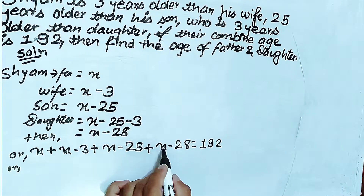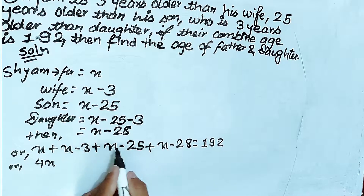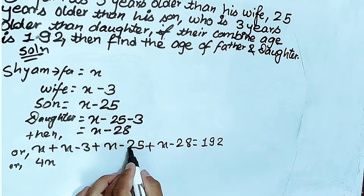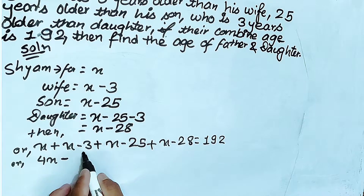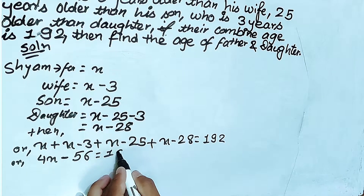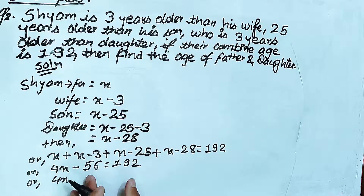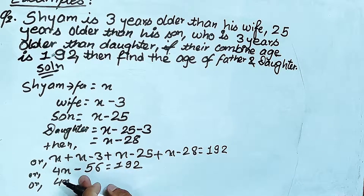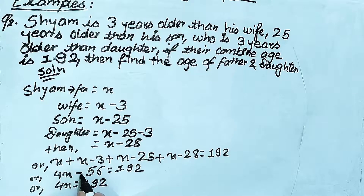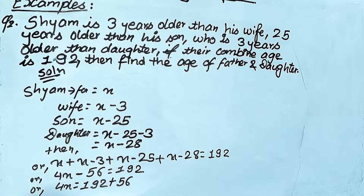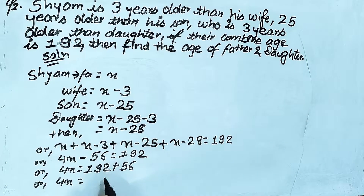x plus x plus x plus x — what are you? x is 4x. 4x minus 3, minus 25, minus 28. Equal to 192. 4x equal to 4x — combine like terms and unlike terms to make them like terms, then we'll be minus 56. Minus is equal to plus 56.